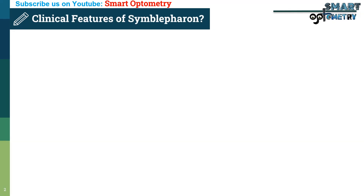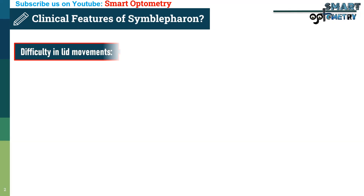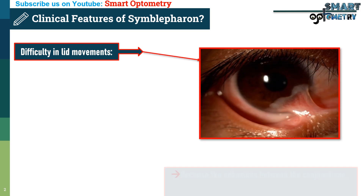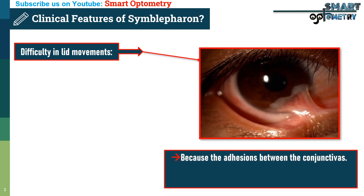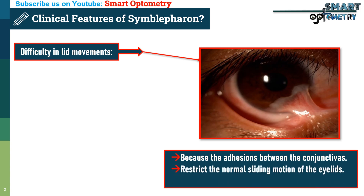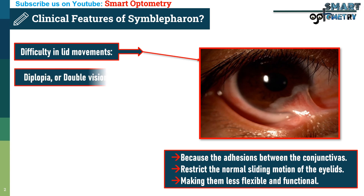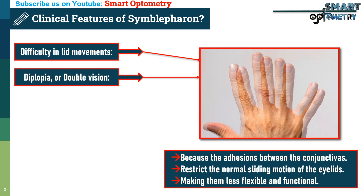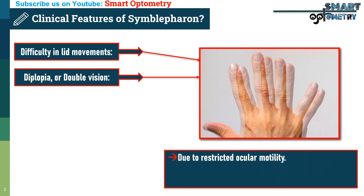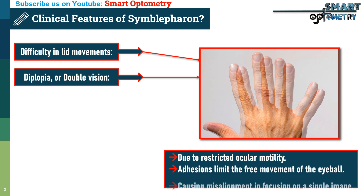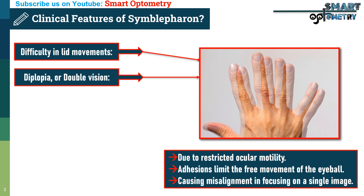What are the clinical features of Symbolpheron? 1. Difficulty in lid movements: this happens because the adhesions between the conjunctiva restrict the normal sliding motion of the eyelids, making them less flexible and functional. 2. Diplopia or double vision: patients may experience diplopia due to restricted ocular motility. The adhesions limit the free movement of the eyeball, causing misalignment and difficulty in focusing on a single image.